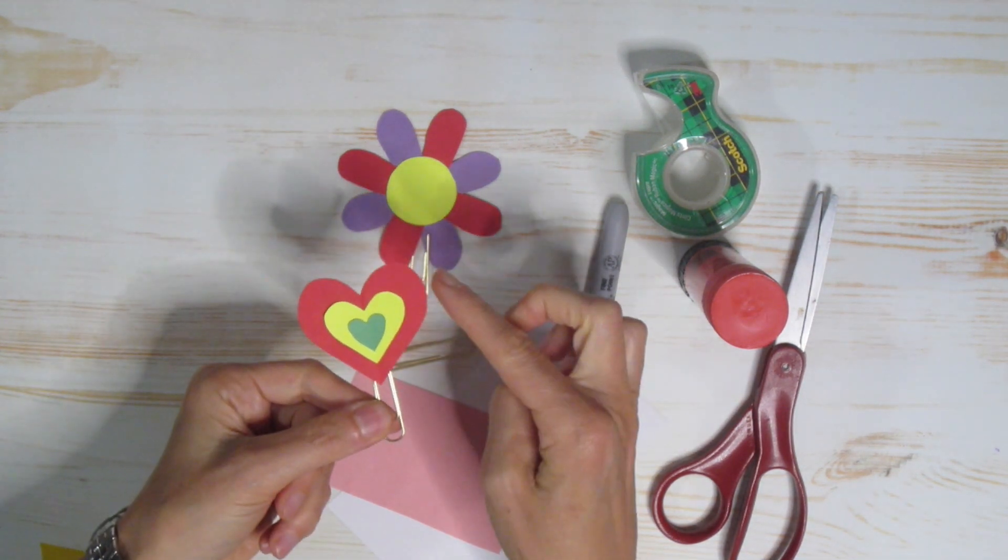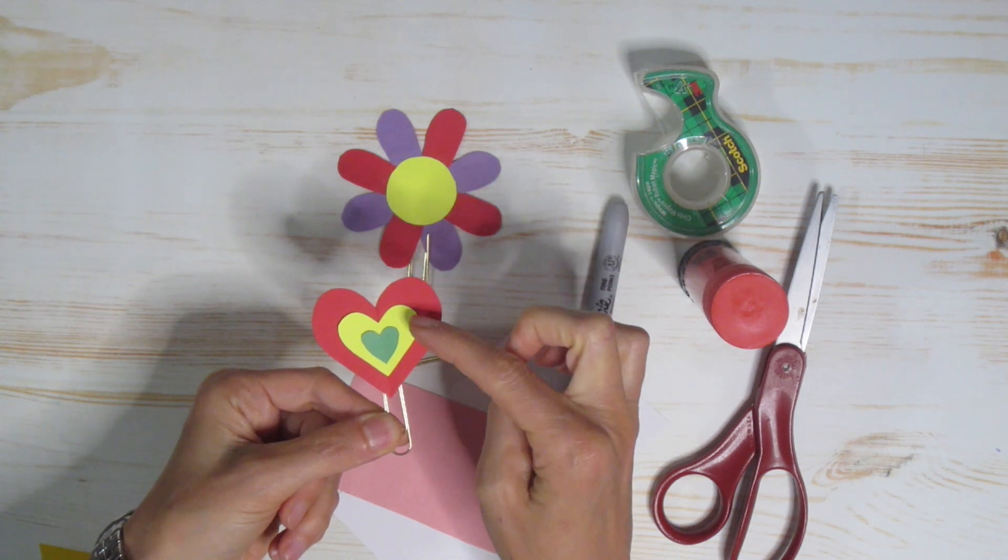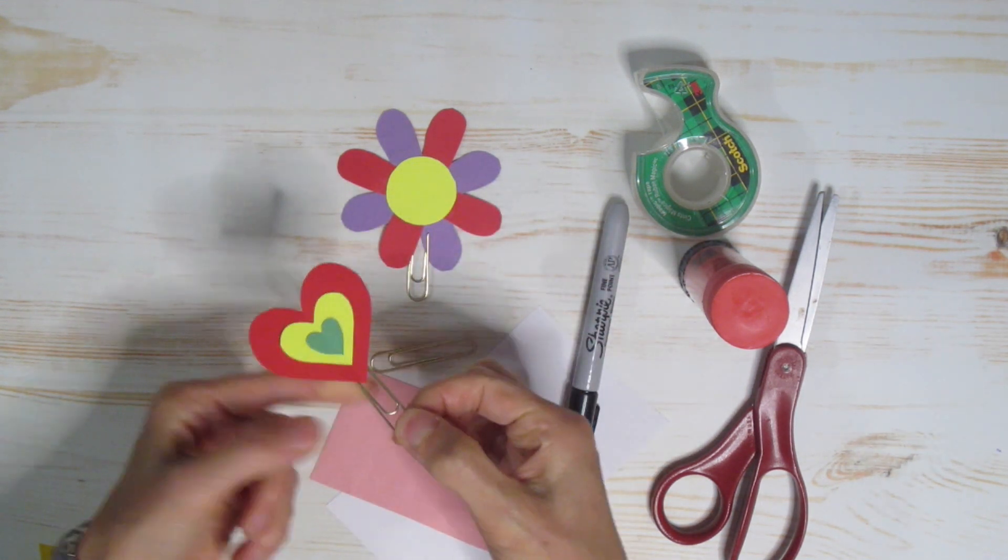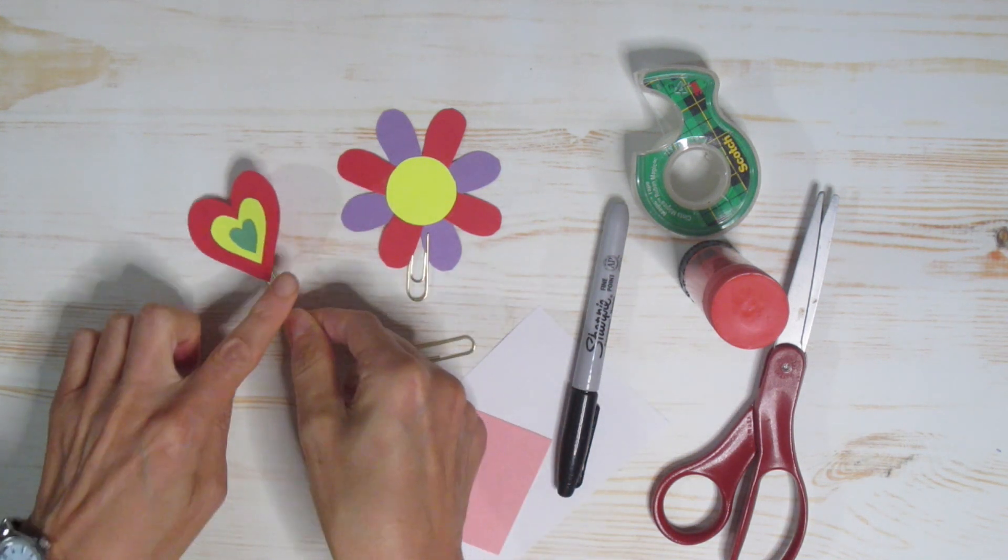You can see all I did was take a heart, another heart, so a large one, a medium one, and a small heart. I glued them together, put them on my paperclip, and now I have a bookmark. So that was one idea.